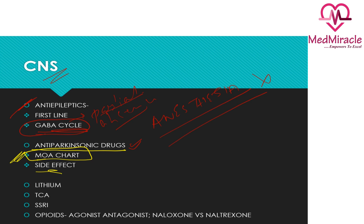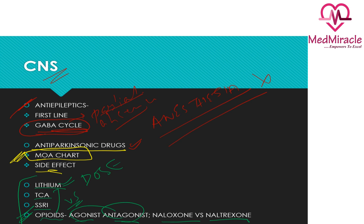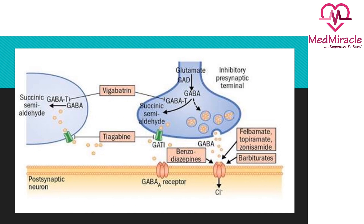There are some other drugs to know in depth: lithium, TCAs, SSRIs, and opioids. For opioids, know the agonists and antagonists and the difference between naloxone and naltrexone — this is very important and most people leave it out. For SSRIs and TCAs, know the differences between them. Lithium is also important to cover thoroughly.